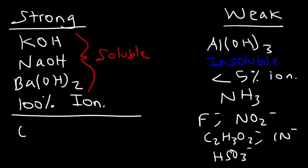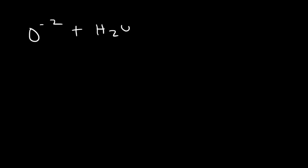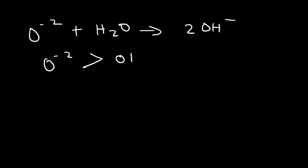Other examples of strong bases besides hydroxide are oxide and hydride. Oxide ion in water grabs a hydrogen from water, creating two hydroxide ions — oxide is a stronger base than hydroxide. Hydroxide is a stronger base than water, and water is a stronger base than H₃O⁺. The fewer hydrogens on an atom, the more basic it is — oxide is most basic, H₃O⁺ is most acidic.